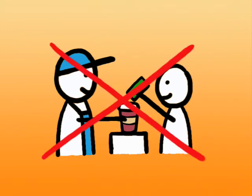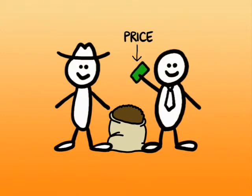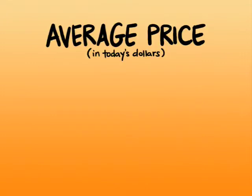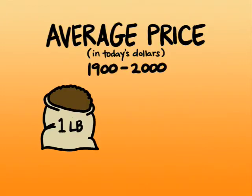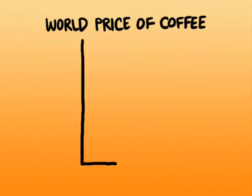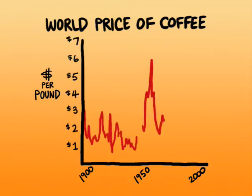We're talking about how much farmers get paid for their coffee crop. The average price of coffee over the last 100 years has been something like $2 a pound. But if we look at the actual prices from year to year, we see something pretty weird — the price is extremely unstable. Why is this?